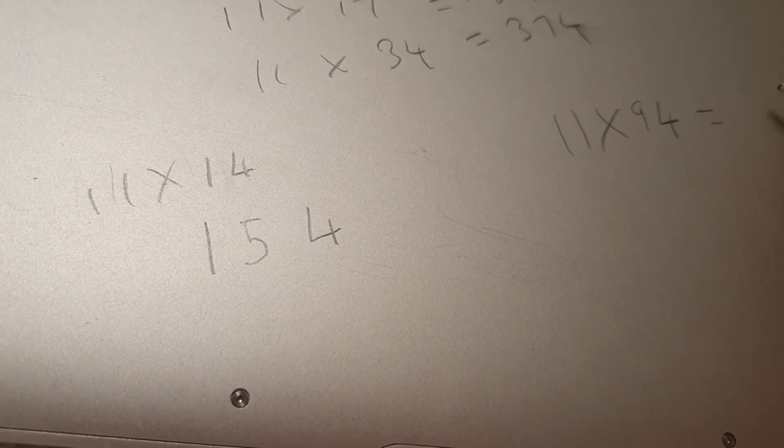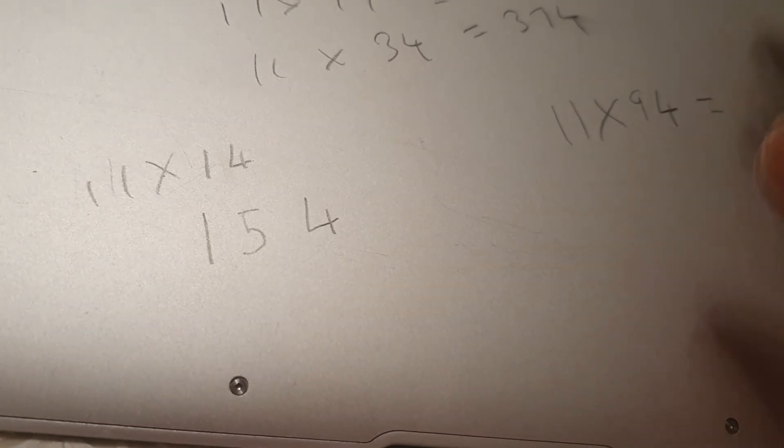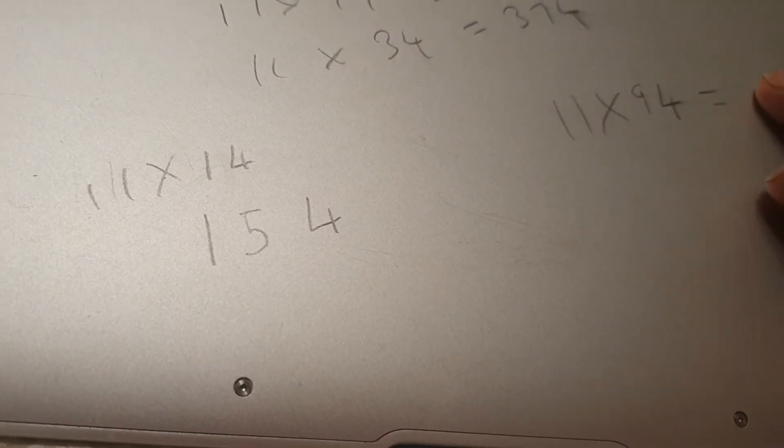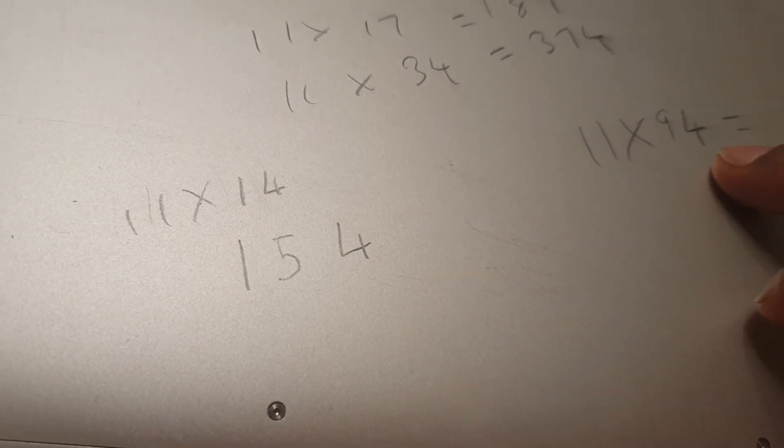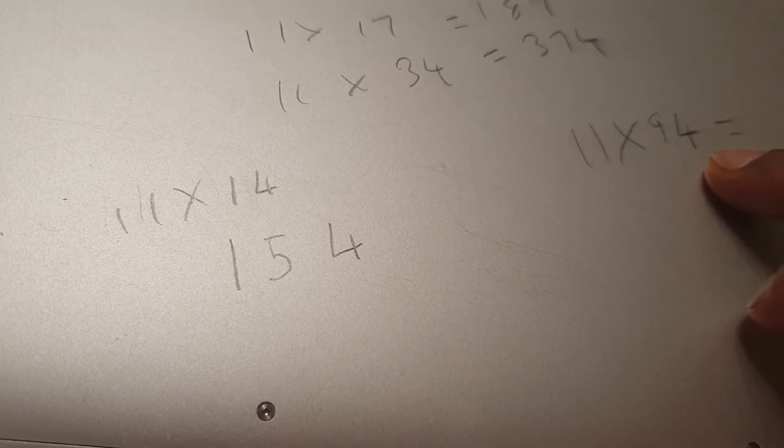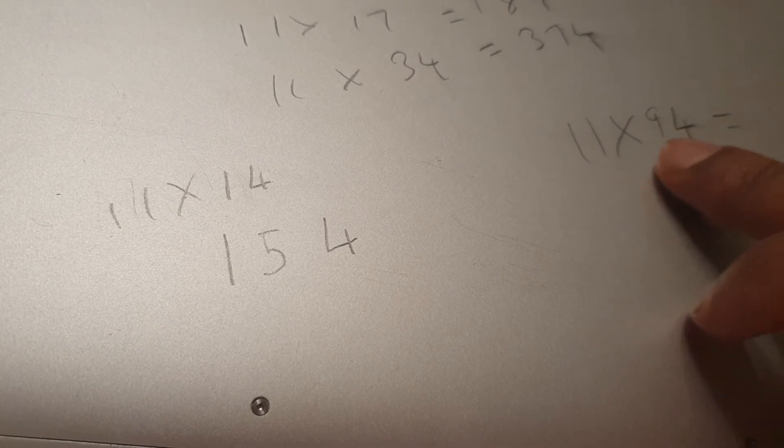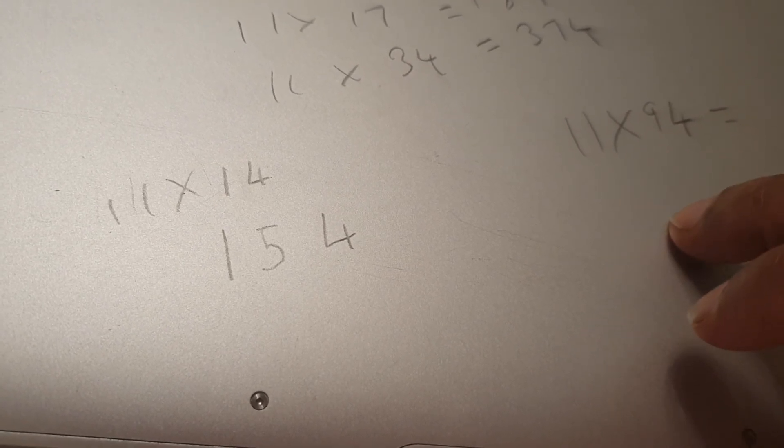Now this is where it gets a little bit more difficult. So I'm not going to show you this. Just work on that. And if you're interested in this, I'll make a separate video on how to do 11 times 94. Effectively, it's very similar except that you're carrying, you're getting 13 and you're carrying the 1 across.